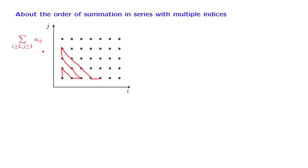Notice, however, we can add those terms in many different orders, and in principle those different orders might give us different kinds of results. On the other hand, as long as the sum of the absolute values of all the terms turns out to be finite, then the particular order in which we're adding the different terms will turn out that it doesn't matter.